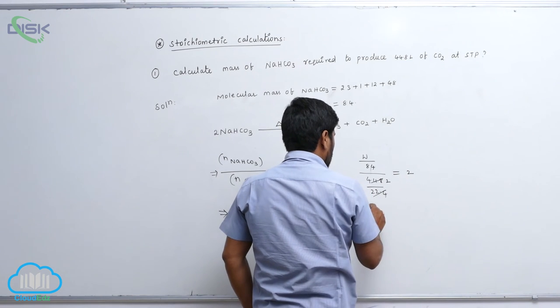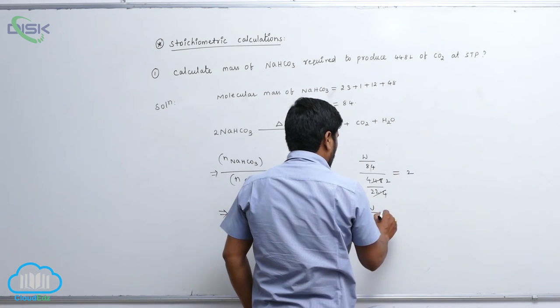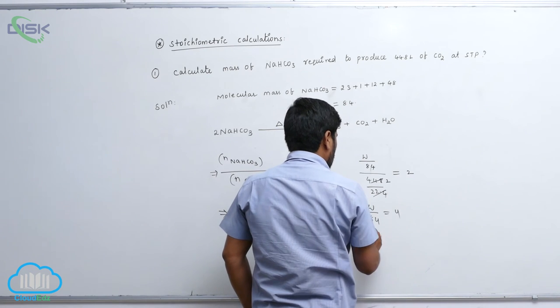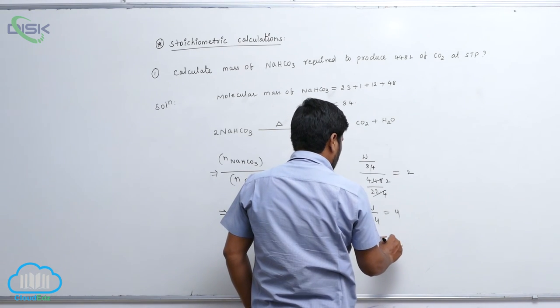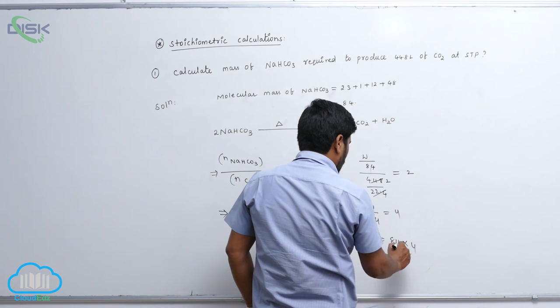This is 1s, this is 2s, this equals to 2. So therefore w by 84 equals to 4, then w equals to 84 into 4.